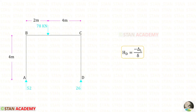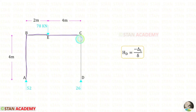The formula to find HD is minus delta L over delta. To find both delta L and delta we are going to use the unit load method. We need to make sections. In this frame there are 4 different parts: AB, BE, EC, and CED, so we have to make 4 sections.